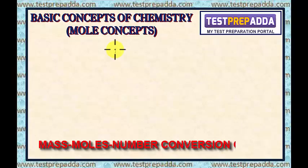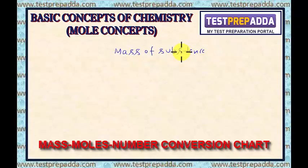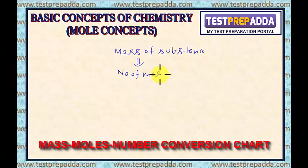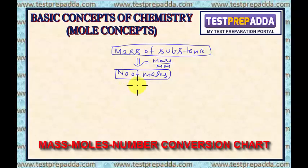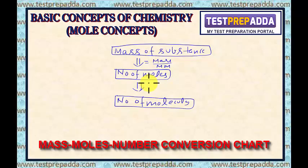In many problems, the mass of the substance will be given and they may ask for number of molecules, number of atoms, or volume if it is a gas. First, convert the given mass into number of moles by dividing with molar mass. Then, number of moles can be converted into number of molecules by multiplying by Avogadro's number, 6.022 × 10²³.